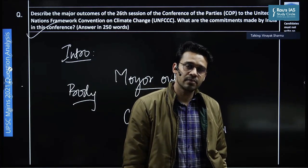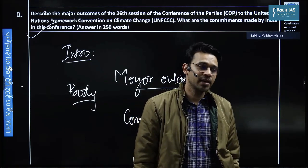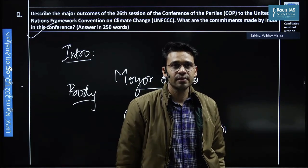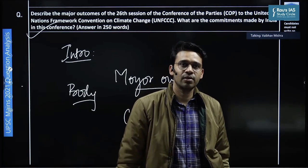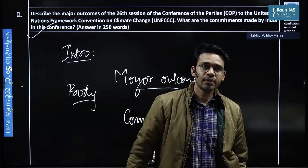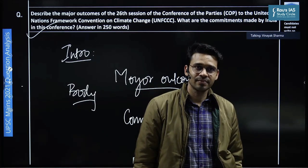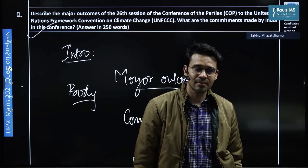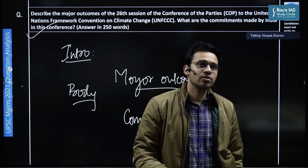So targets were set to restrict the global warming, but Abhishek methane was not agreed by all the parties. For example, India is not party to methane agreement. It is being pushed by developed countries. Target was set to restrict the global warming up to 1.5 degrees Celsius.